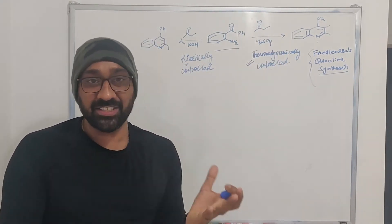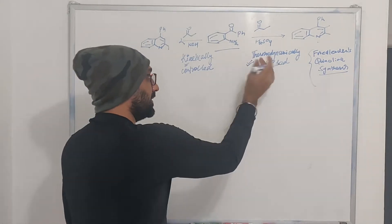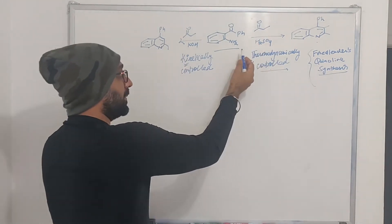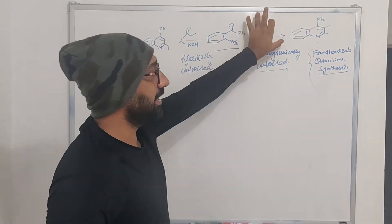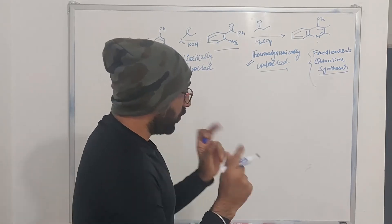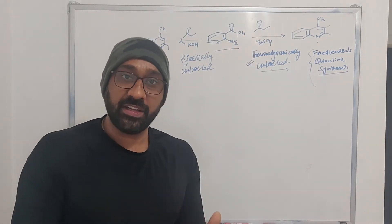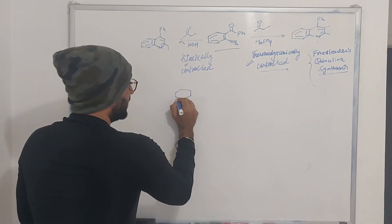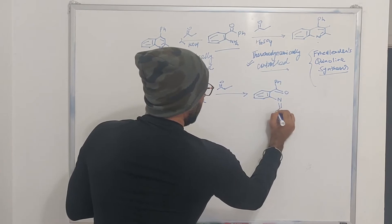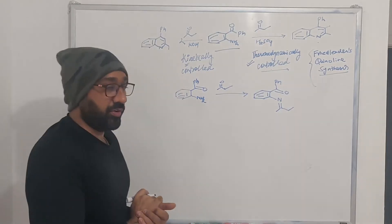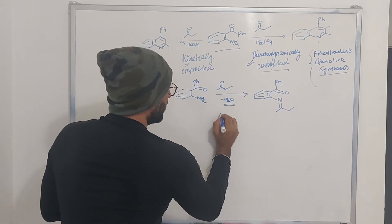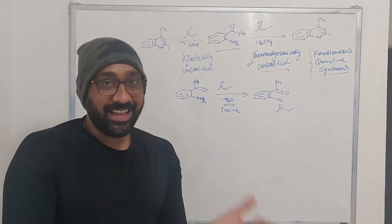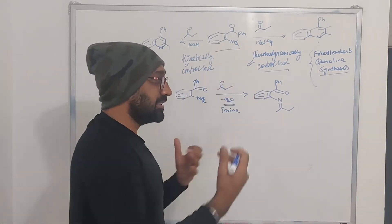There are two mechanisms which are proposed for this reaction. For the first mechanism: what we have is an aniline and a ketone. First of all, there could be formation of an imine — simply by elimination of water. So here what we have is this aniline, and this is the imine that we are going to form. When we treat ketones with primary amines, this is what we form.